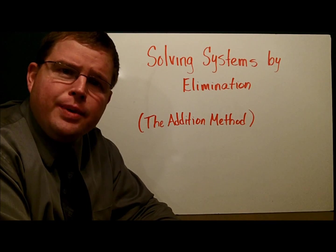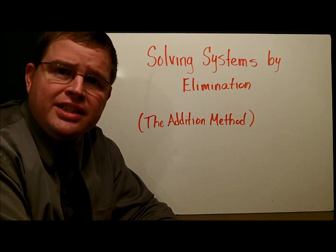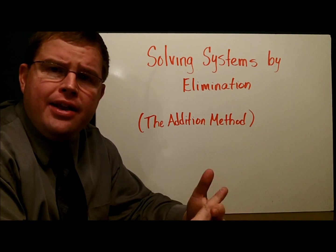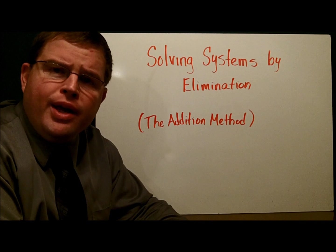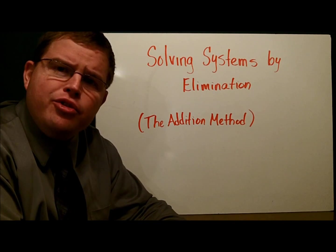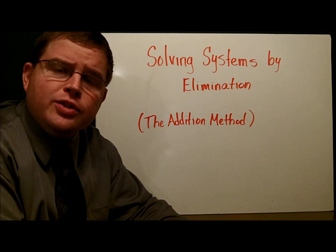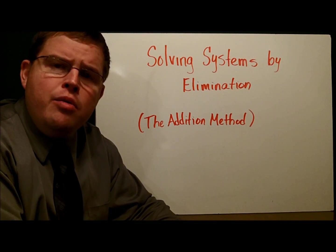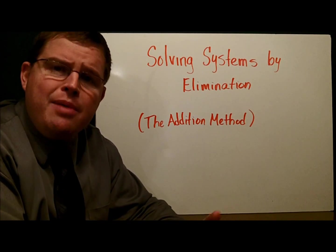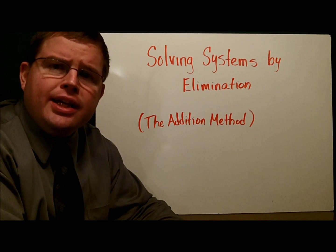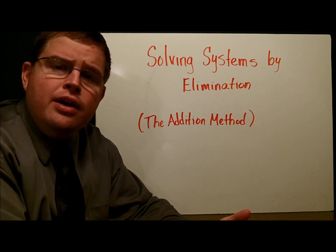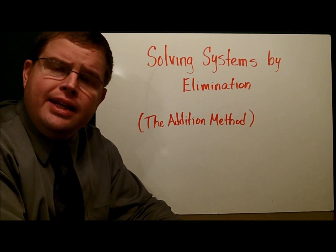So far we've seen two different ways we can solve systems of equations. We saw that we can graph the two lines and find the point where they intersect. We also saw the substitution method where we solve for one variable and then plug that into the other equation. Today I'm going to show you yet another method which actually comes from the substitution method. We call it elimination or sometimes we call it the addition method.